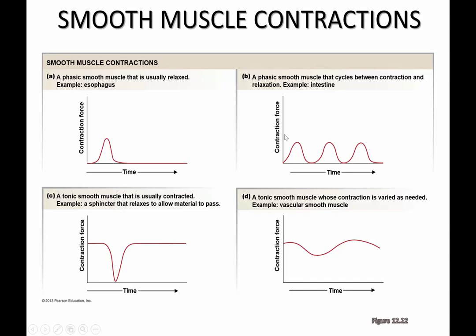A rhythmic phasic smooth muscle will have peaks of contraction followed by periods of rest, peaks of contraction followed by periods of rest. If you remember from the lab where we showed you a video of intestinal smooth muscle rhythmically contracting, that's an example of this kind of smooth muscle. Those rhythmic contractions help to move the chyme or digested food through the intestinal tract.